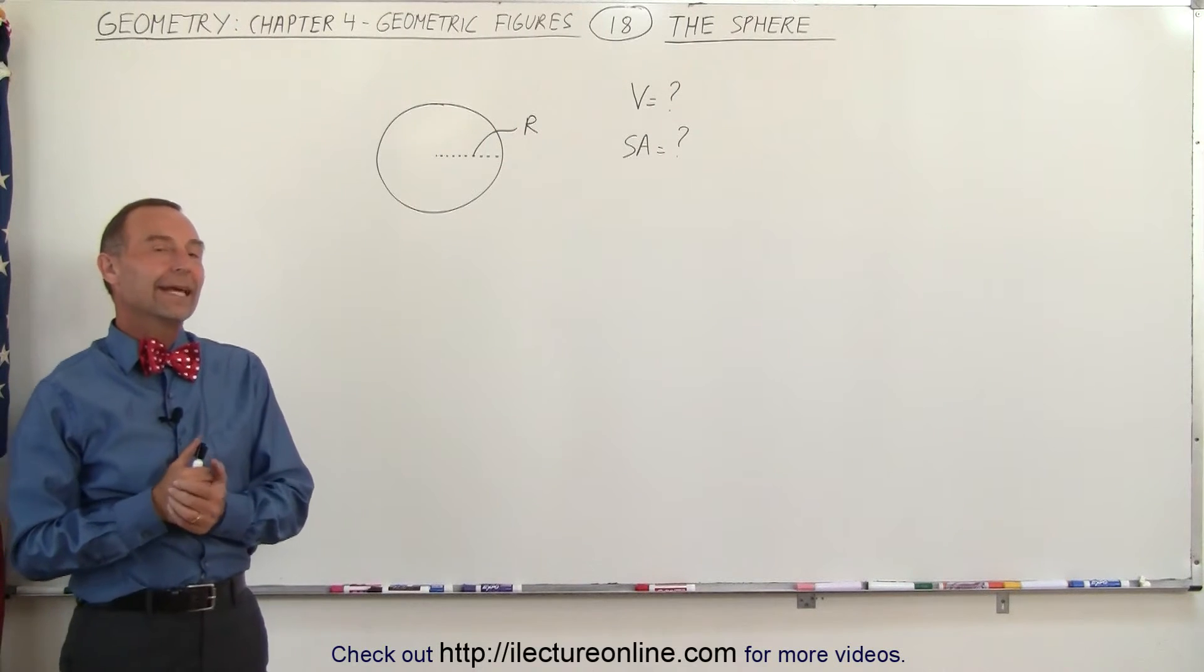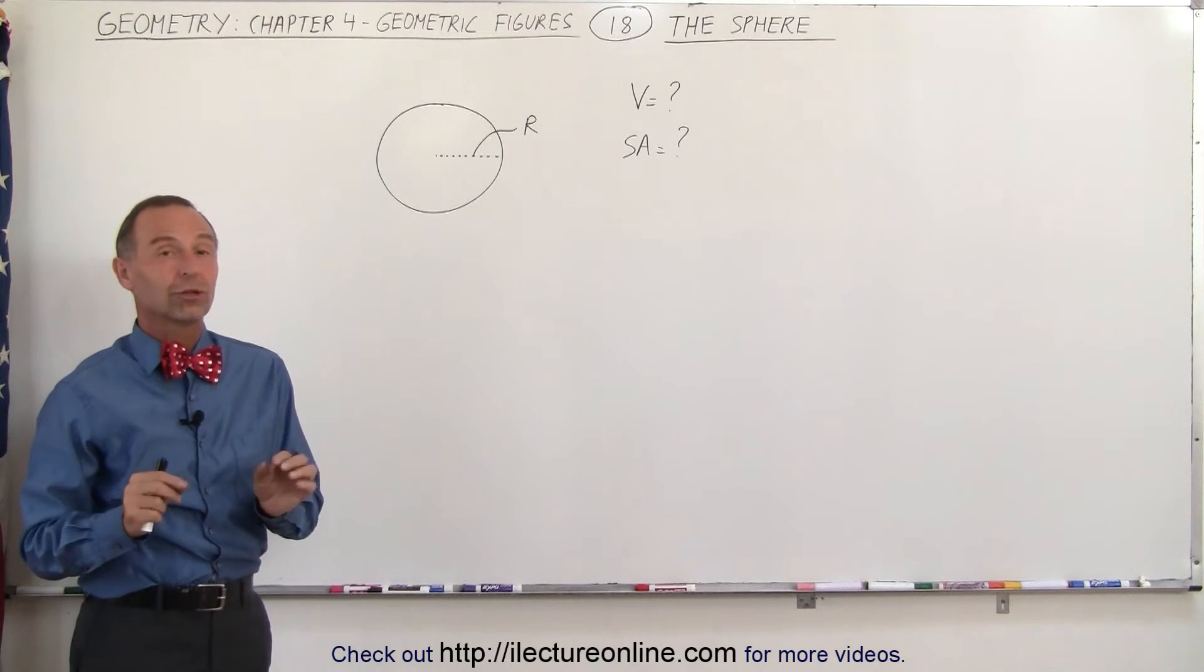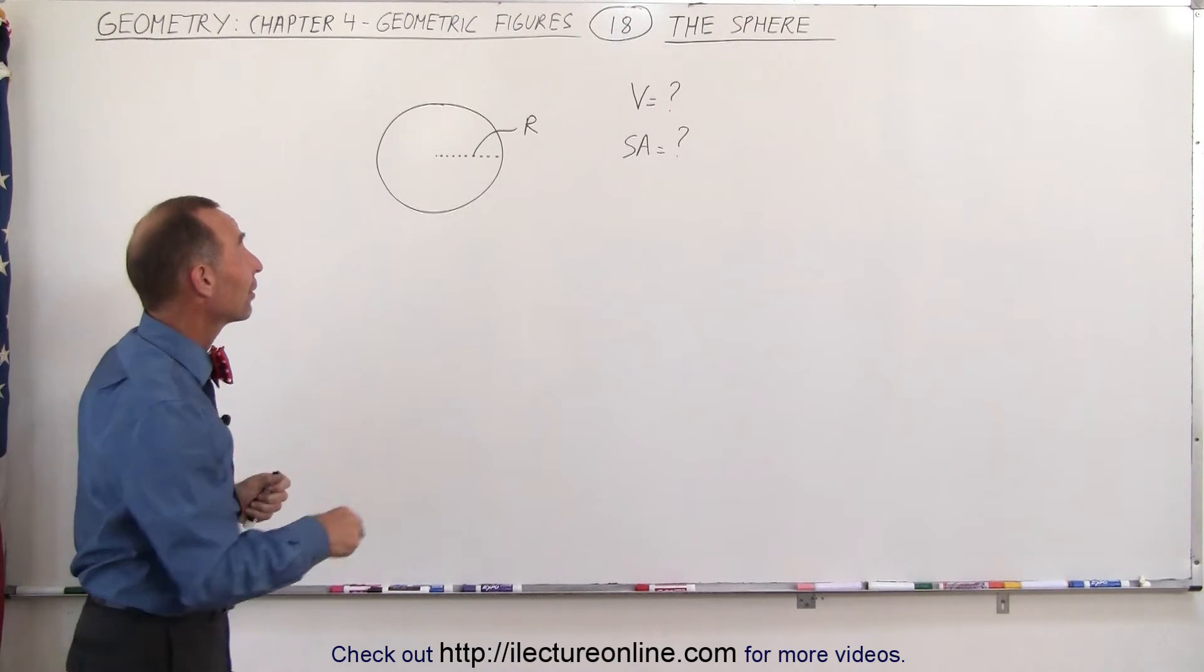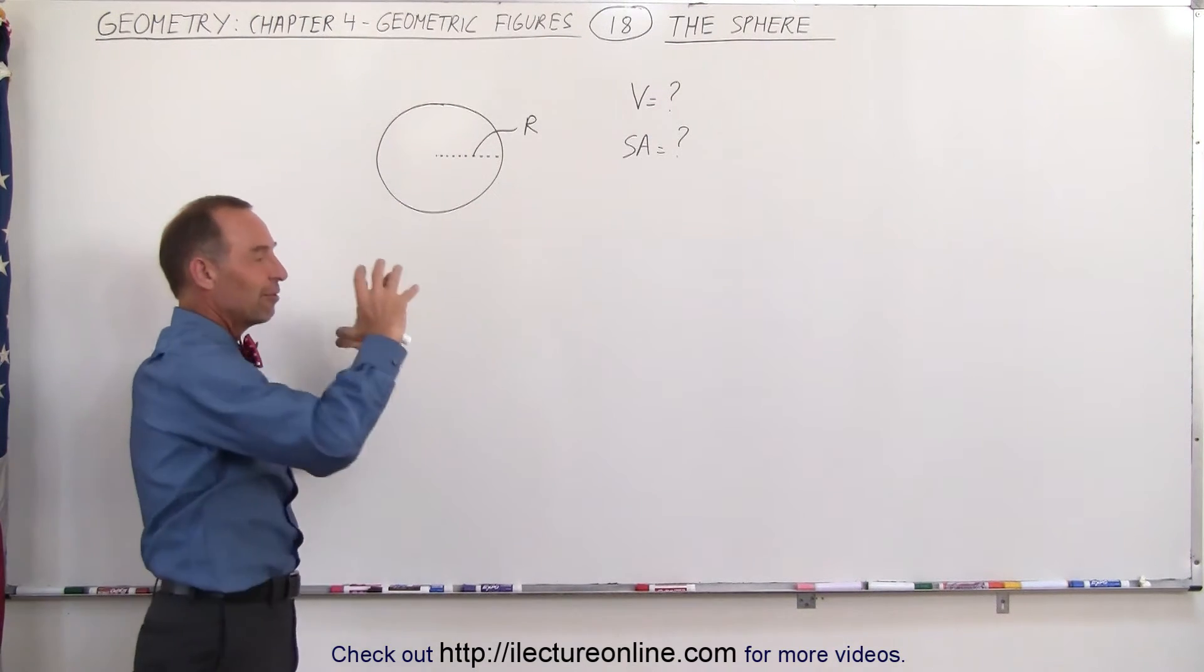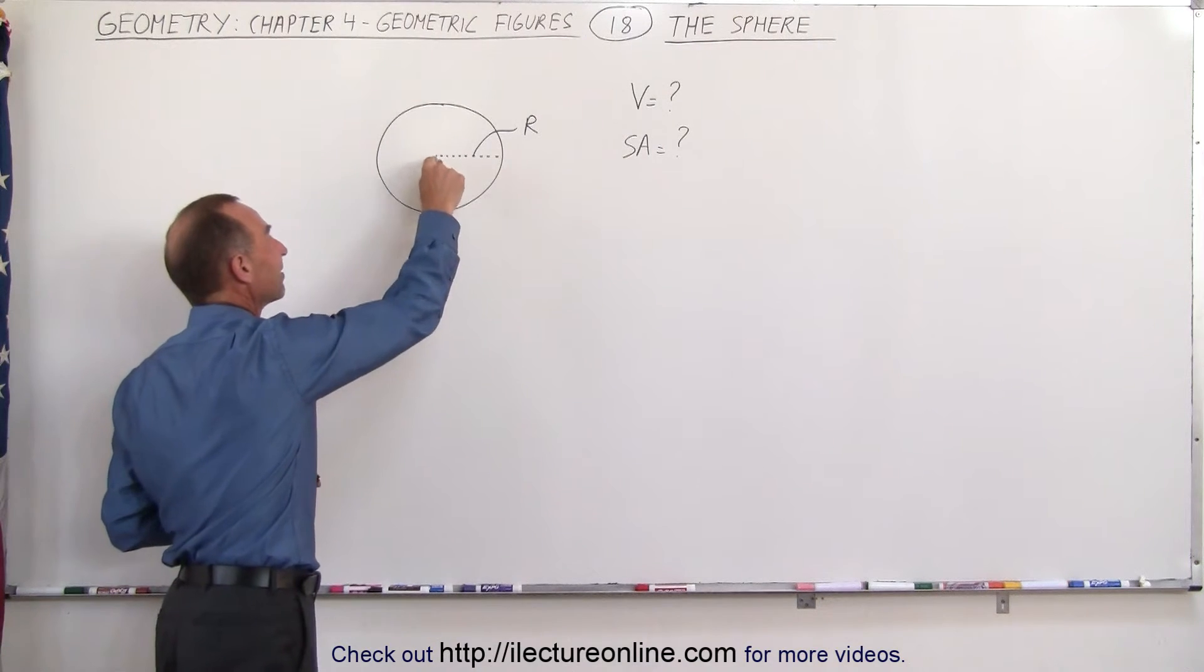Welcome to ElectronLine and here let's take a look at this sphere. Now again, just like with the circle, the only thing we need to know about the sphere is the radius because every point on the sphere is equidistant from the very center of the sphere.